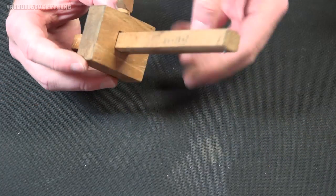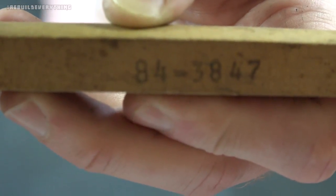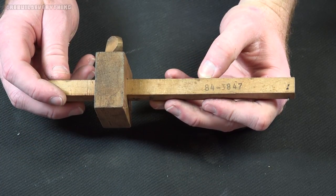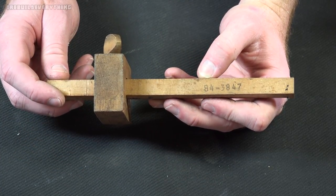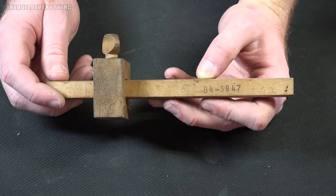It does have a sort of marking stamped on the back of it: 84-38-47. Well, that didn't do anything for me either. 84 dash 38 47—that didn't turn up any Google results that pointed me in the right direction.